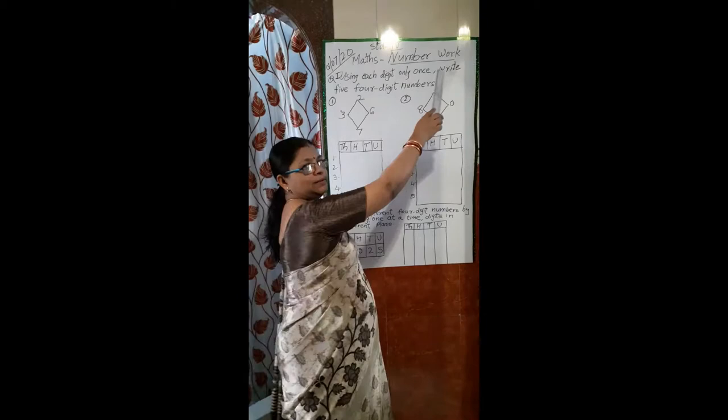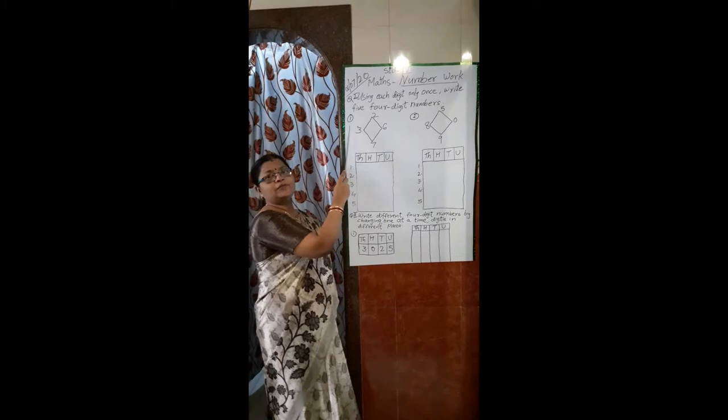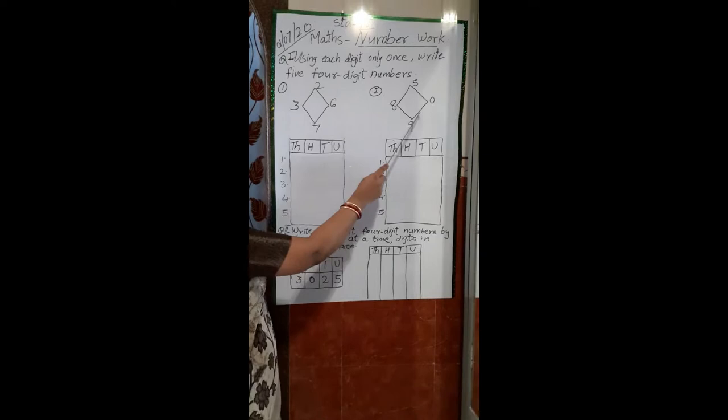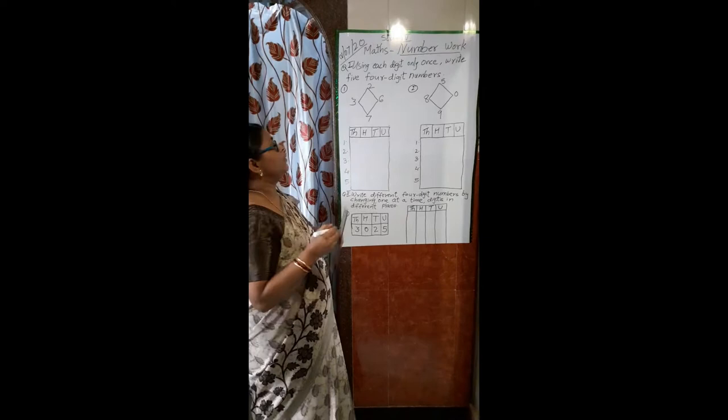Hello students, today we are going to learn about four-digit numbers. What we have to do is, using each digit only once, write five four-digit numbers. You can see the first question given here. These are the digits 2, 6, 7, and 3. The second question is given the same way — using these digits once, we have to make five four-digit numbers.